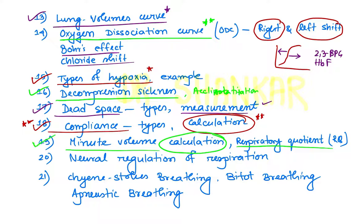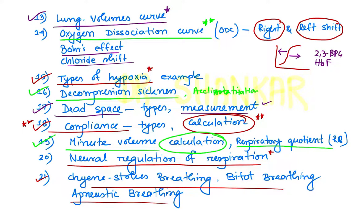Respiratory quotient — this question was once asked in INICT exam, so you should know how to calculate RQ. Next, neural regulation of respiration is an important topic: what is DRG, what is VRG, what is apneustic center, what is pneumotactic center, their functions and roles. Cheyne-Stokes breathing, Biot's breathing, and apneustic breathing — their graphical presentations are important. The graphical presentation of each type of breathing, along with different reflexes related to the respiratory system like the Hering-Breuer reflex, paradoxical reflex of Head, and J receptors, are important.